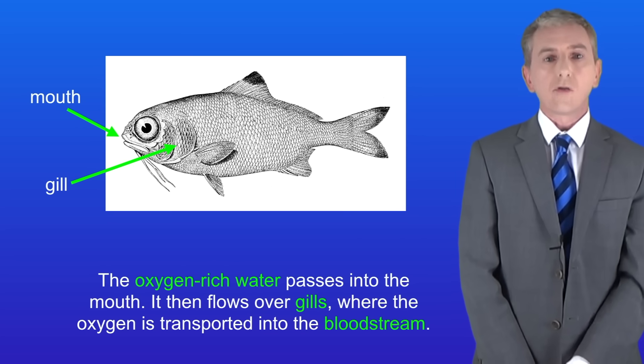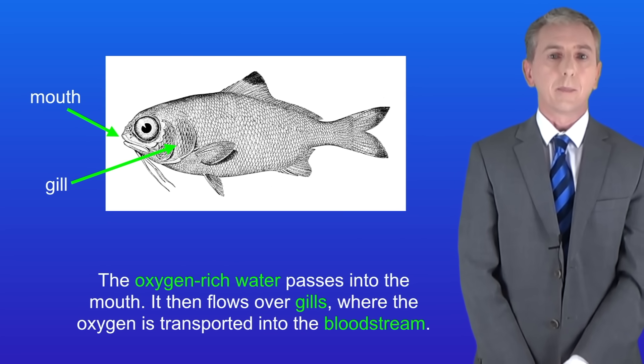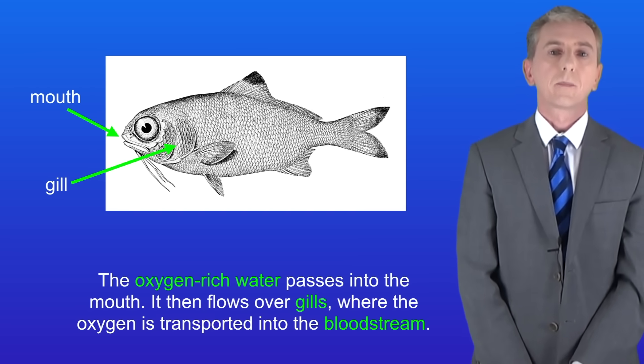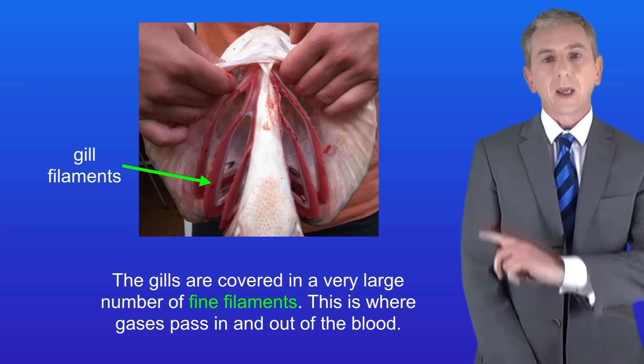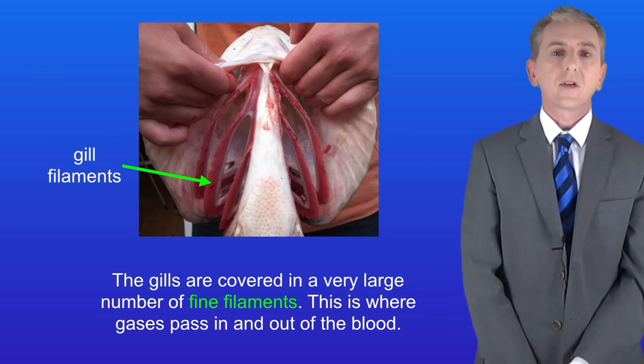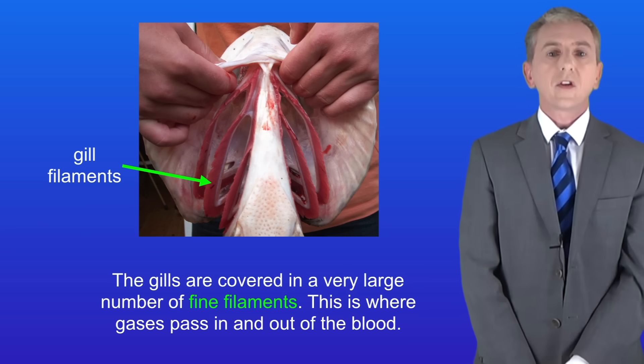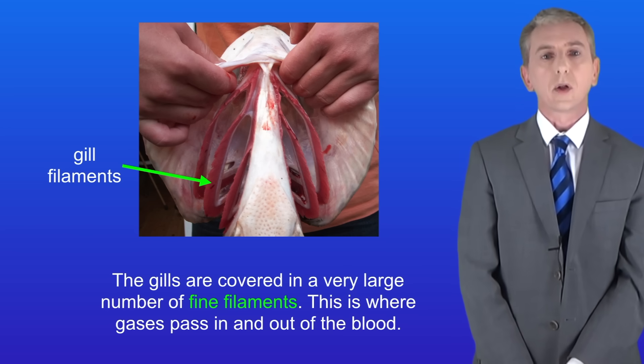Fish get their oxygen from the water. The oxygen rich water passes into the mouth. It then flows over gills where the oxygen is transported into the bloodstream. I'm showing you a picture of gills here. As you can see, the gills are covered in a very large number of fine filaments. This is where gas is passed in and out of the blood.